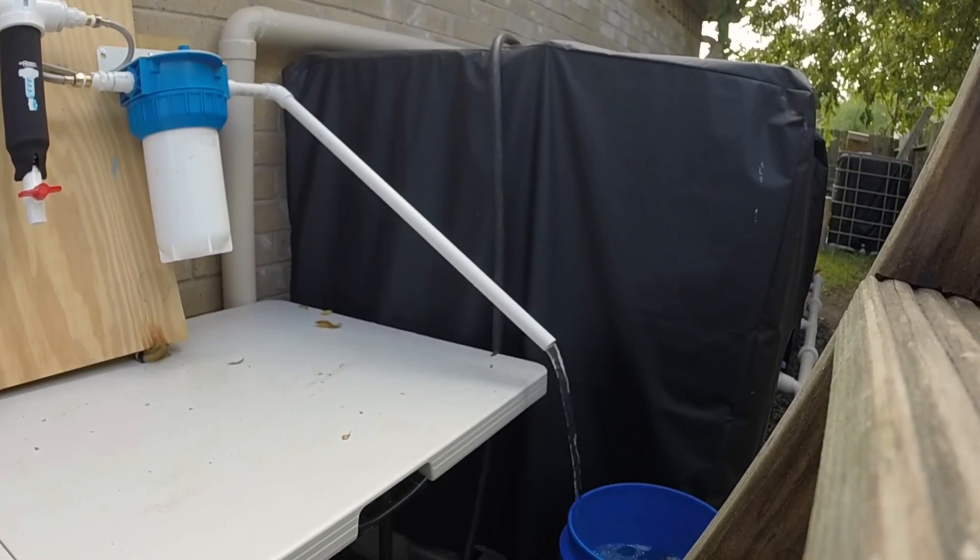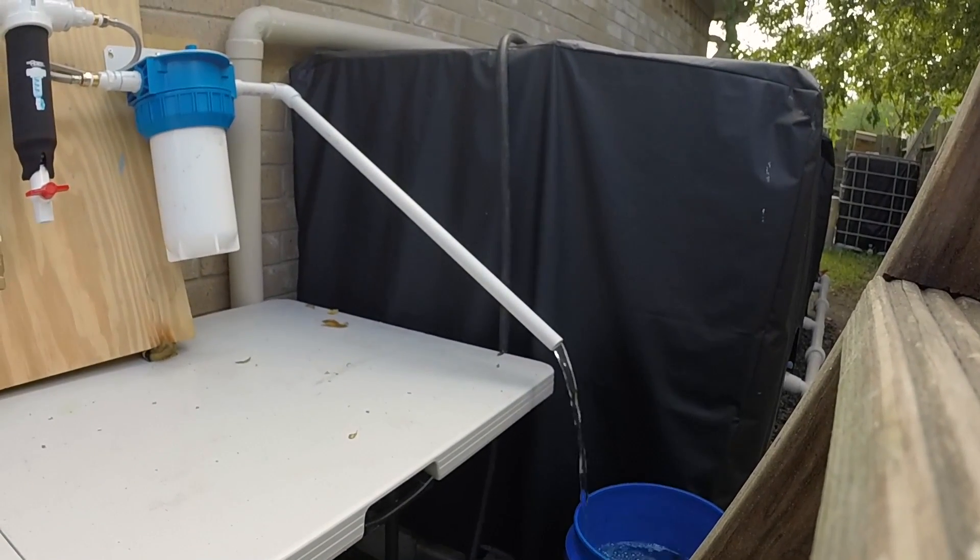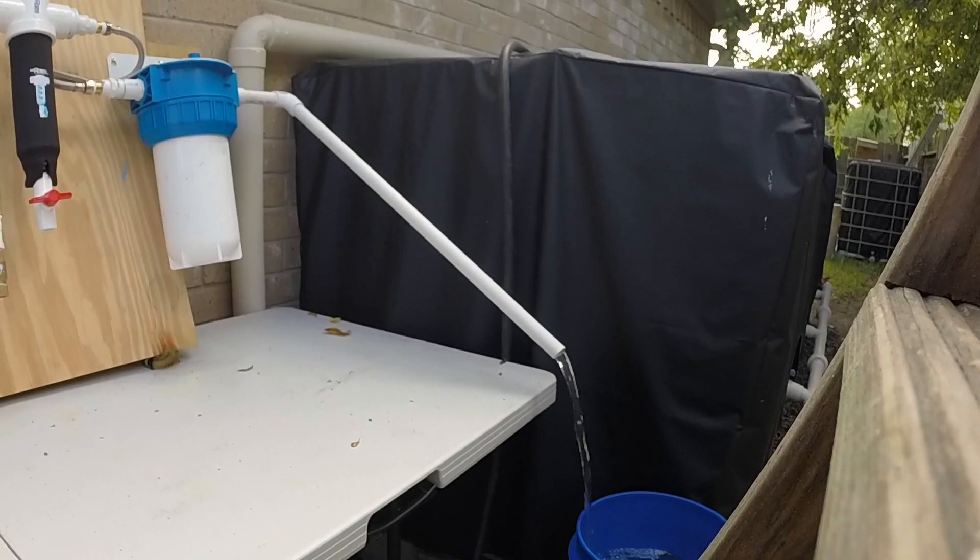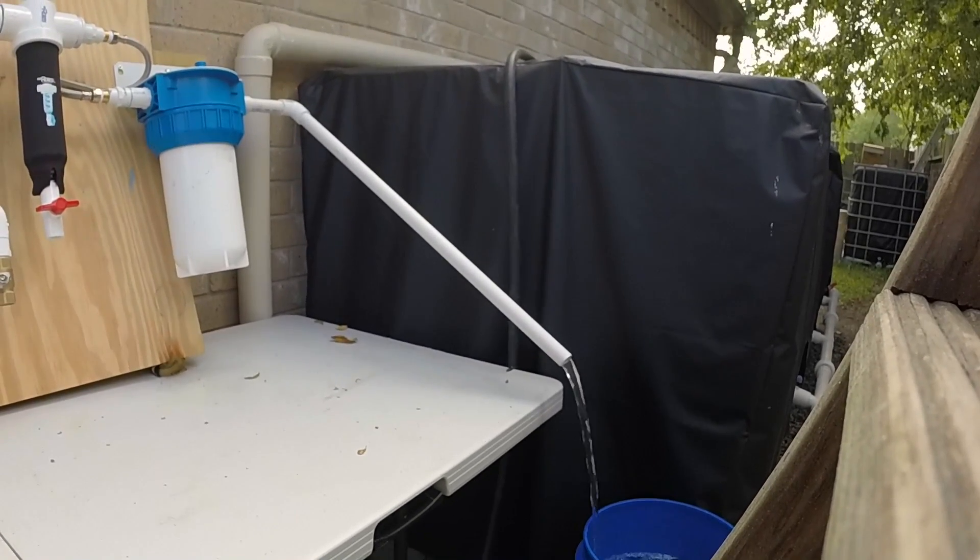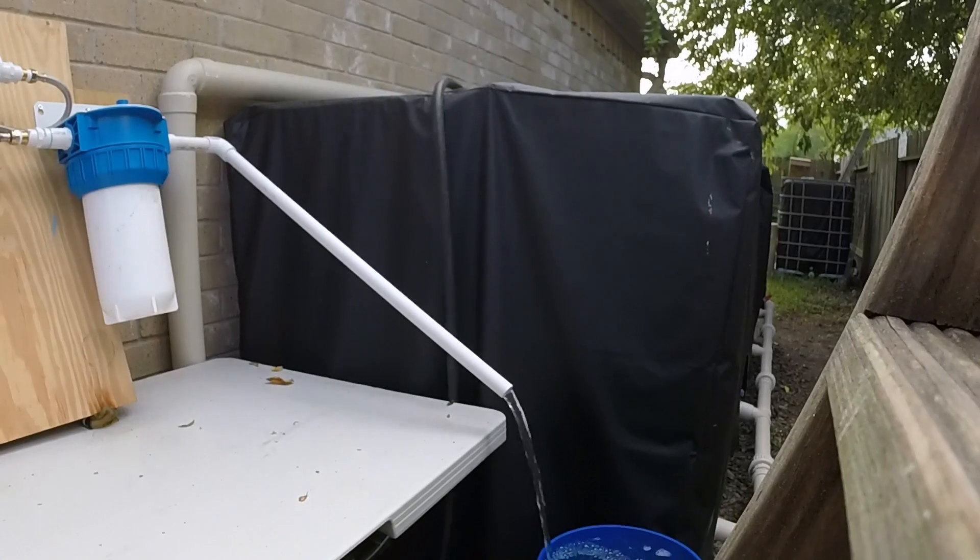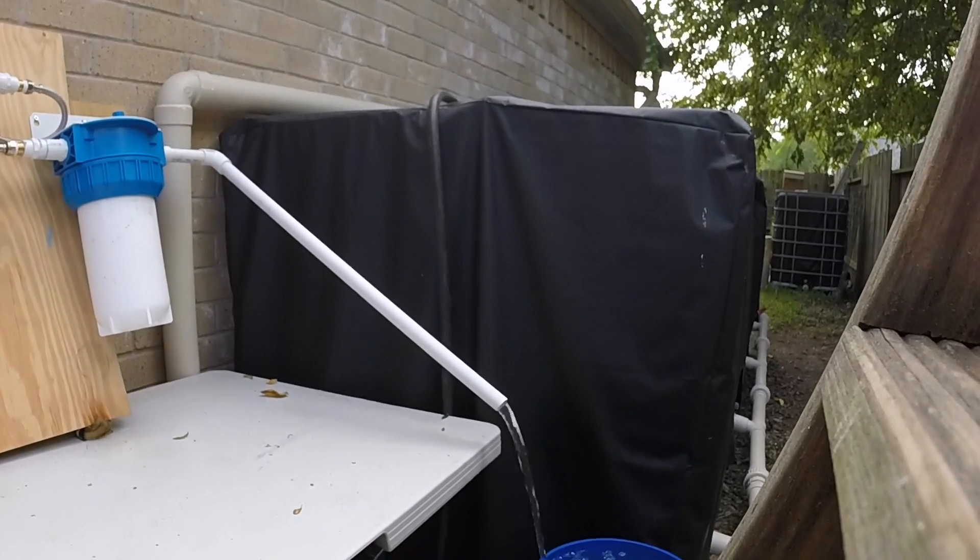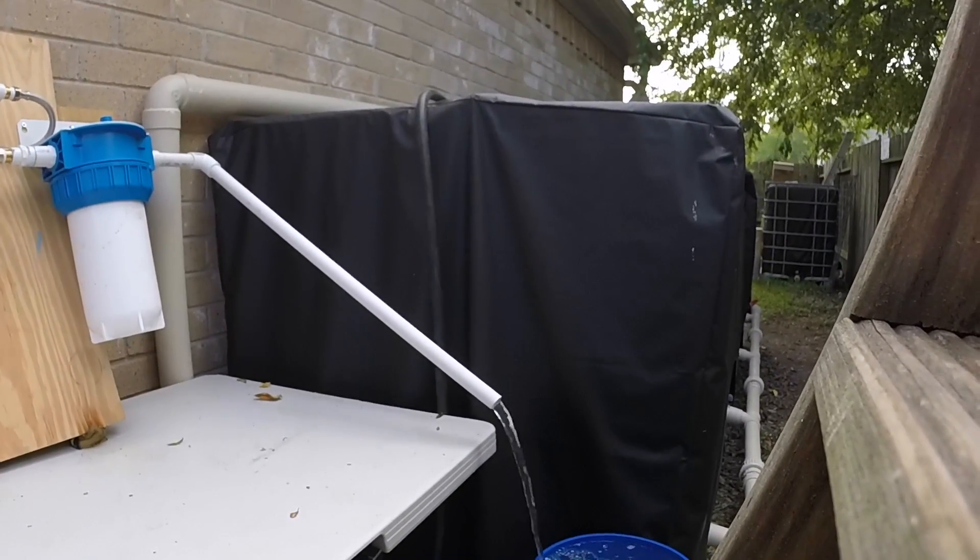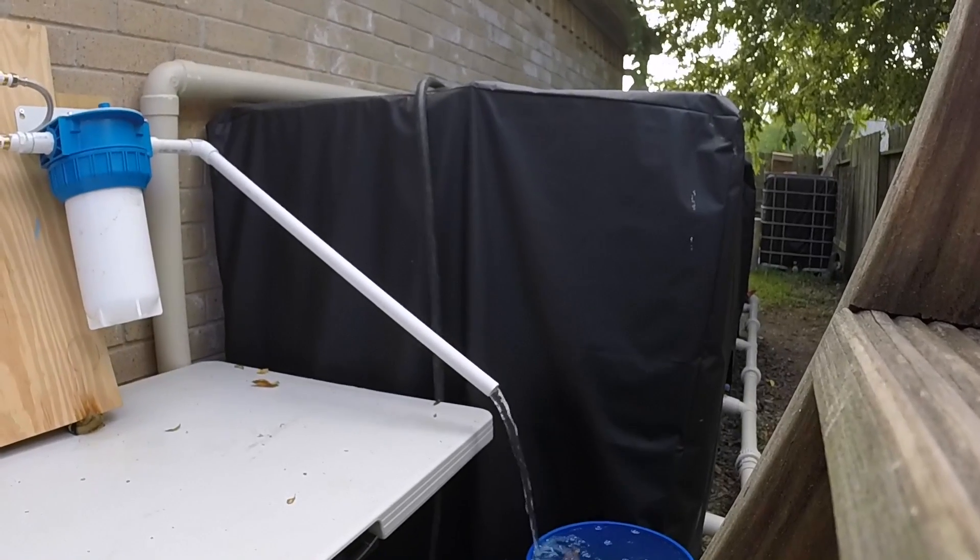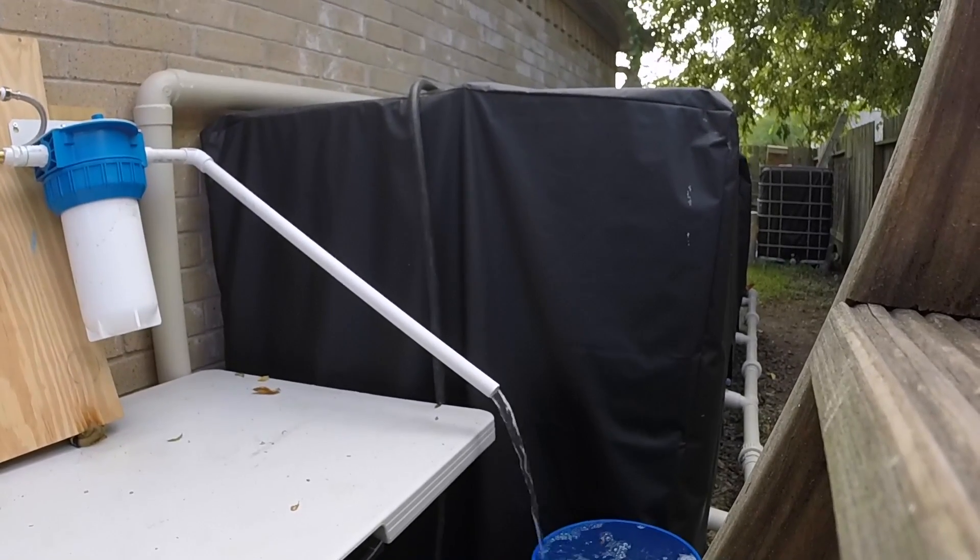My pump is a five gallon per minute pump. Realistically though we probably filter around four gallons a minute. And those leaves aren't from the filtered water. I had this bucket out here overnight and had a little storm last night and so a little couple leaves got in there.